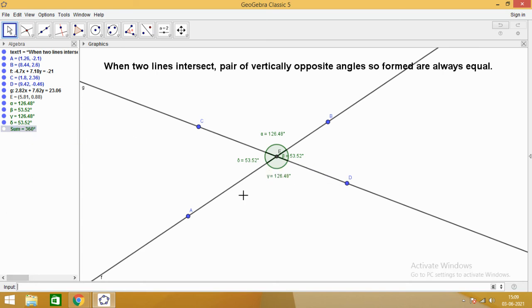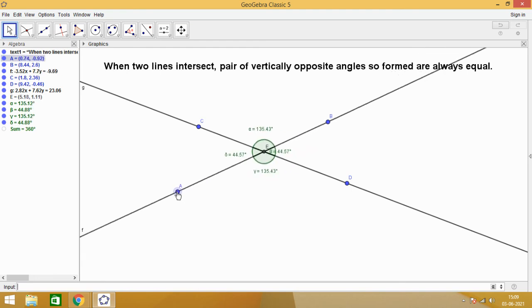So I hope you have understood this. When two lines intersect, pair of vertically opposite angles are always equal.